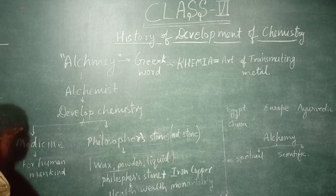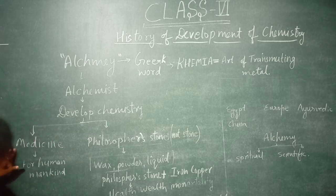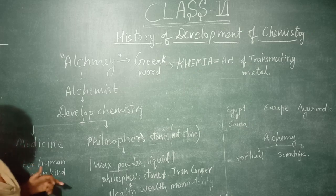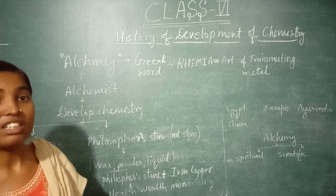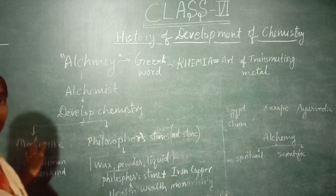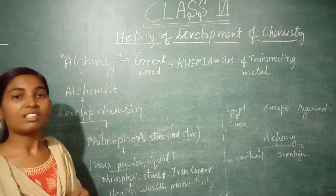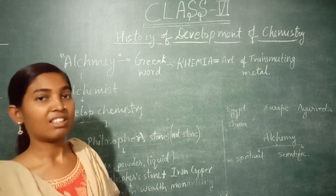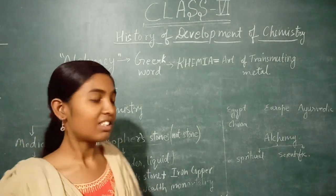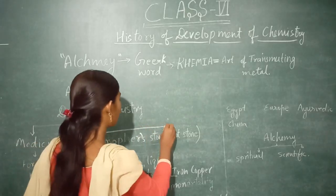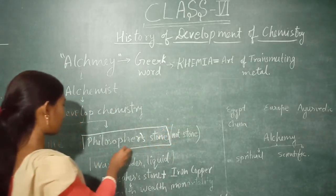First, they developed some things used for medicine, which is used for human mankind. Not only for humans — they also found out medicines for plants as well. Next, they wanted to find a magical thing called the philosopher's stone. These alchemists wanted to find this philosopher's stone.